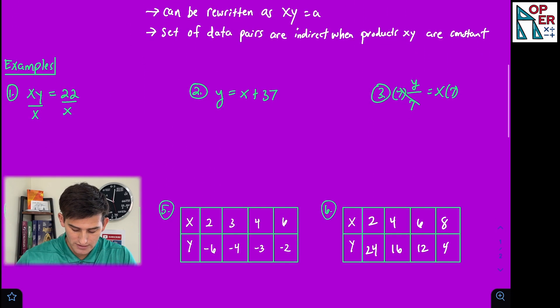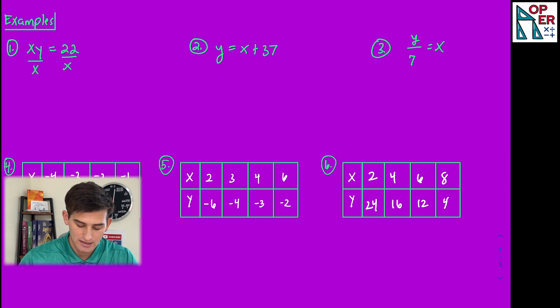We're going to look at six examples. Three of these examples have us looking at an equation and telling if it is indirect or direct. And for the last three, we have tables of values that we're going to classify as direct or indirect.